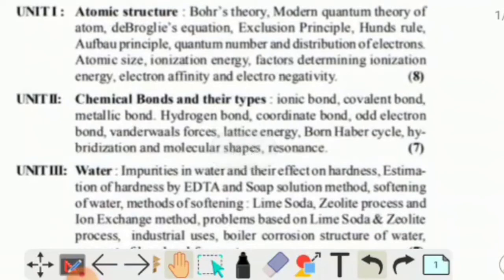The atomic structure unit includes Bohr's theory, modern quantum theory of atoms, de Broglie's equation, exclusion principle, Hund's rule, quantum number and distribution of electrons, atomic size, ionization energy, factors determining ionization energy, electron affinity, and electronegativity.